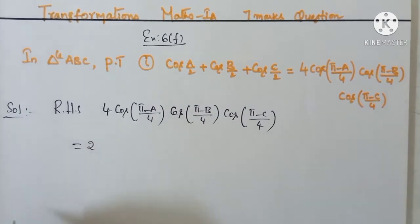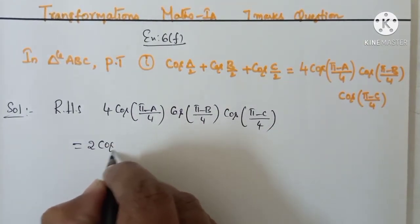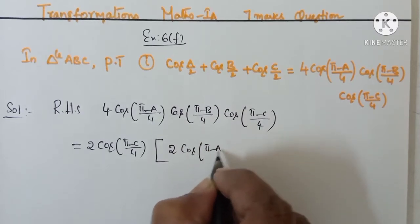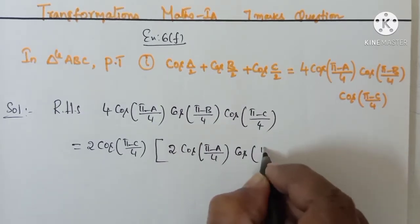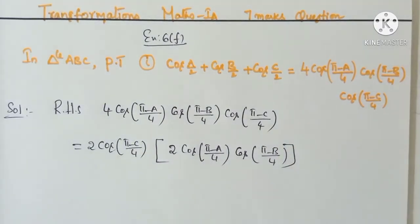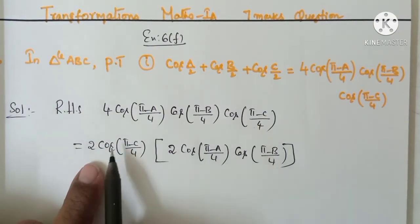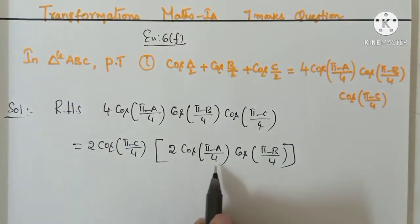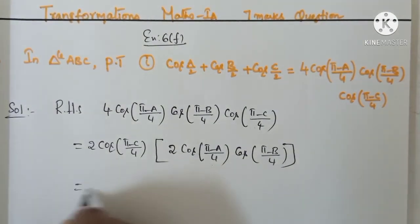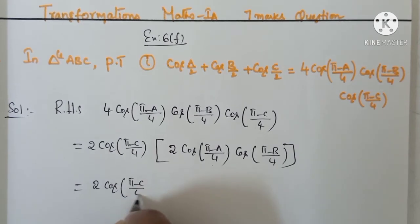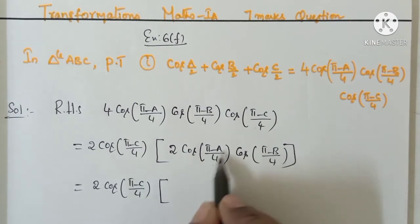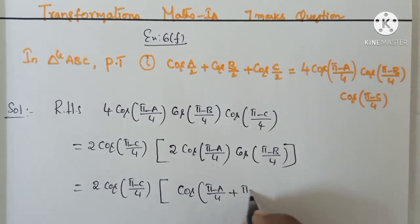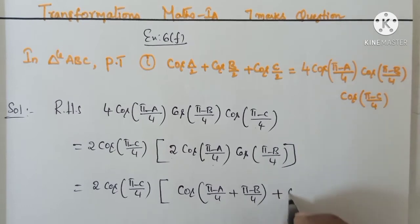We split 4 as 2 into 2. Take cos((π−C)/4) with one of the 2s. Group cos((π−A)/4) · cos((π−B)/4) inside the bracket. Apply the formula: 2 cos A · cos B = cos(A+B) + cos(A−B). So we get 2 cos((π−A)/4) · 2 cos((π−A)/4) · 2 cos(A) · cos(B).